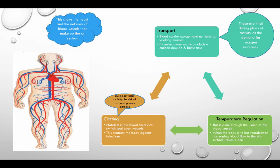This diagram to the left shows the heart and the network of blood vessels that make up the CV system. The three main functions include transport: blood carries oxygen and nutrients to working muscles, and also carries away waste products, for example carbon dioxide and lactic acid. These are vital during physical activity as the demand for oxygen increases.